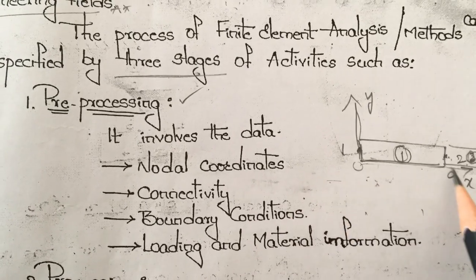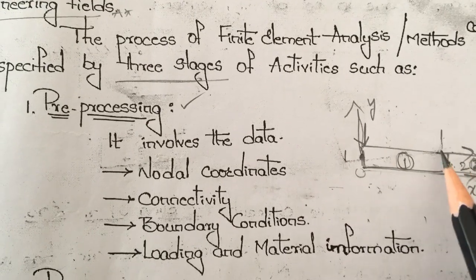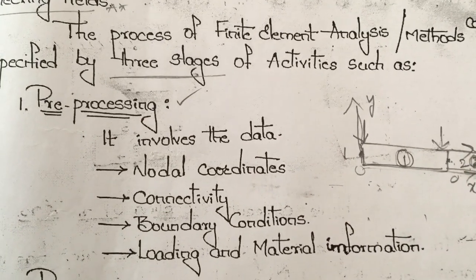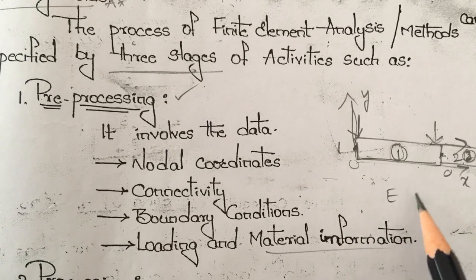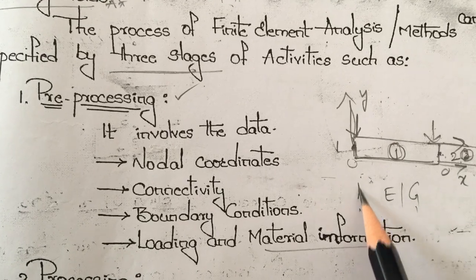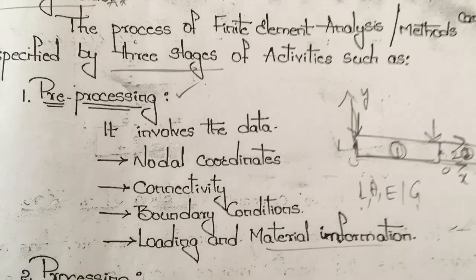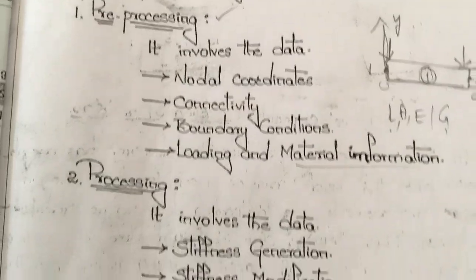Next, the boundary conditions - where the load is applied on the truss, beam, or bar, and what are the material information like Young's modulus, rigidity modulus, area, and length. All of this comes under the pre-processing.